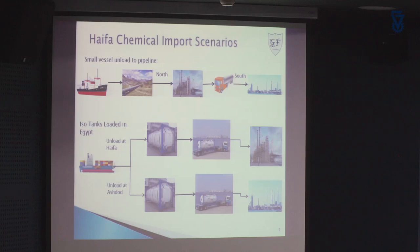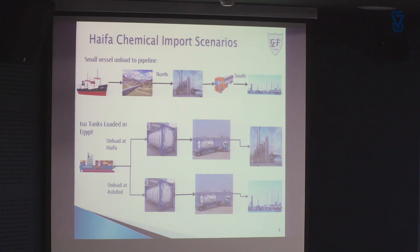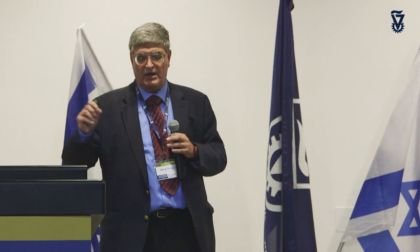I want to focus on two primary scenarios. The first is the small vessel — a 2,500-ton ship — unloading to a pipeline, running the pipeline at 25 tons per hour to a plant, using some of that ammonia at that plant, and transporting the rest by tanker truck to another plant. The second scenario is bringing in isotanks and delivering them either at Haifa or at Ashdod, then transporting them to the individual plants.